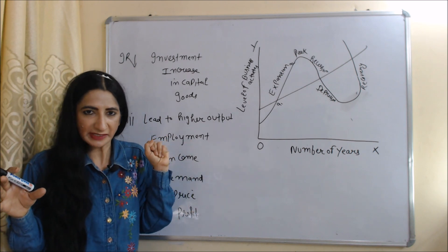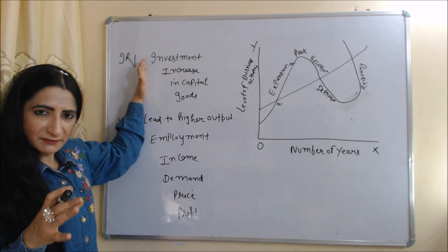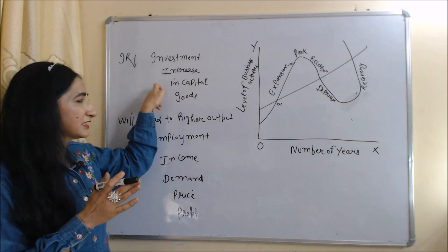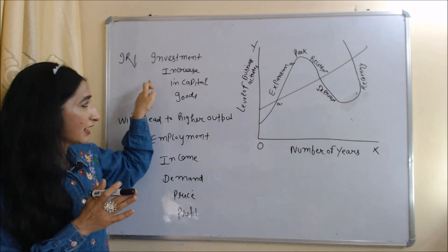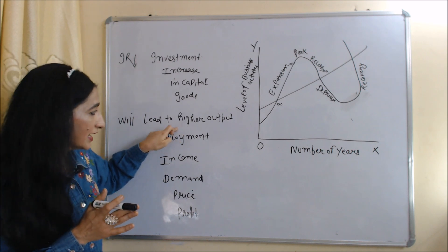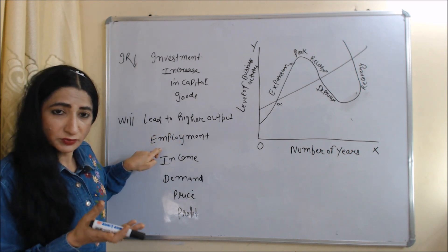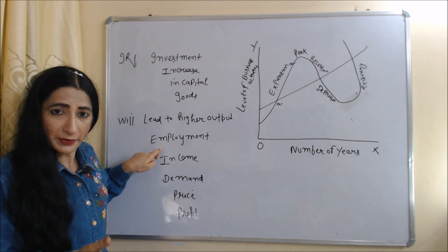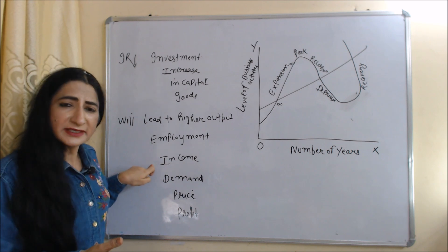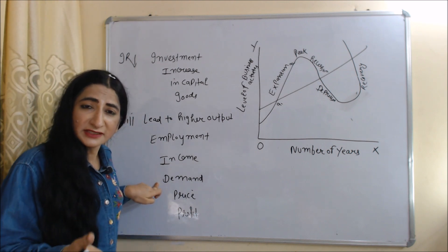Now we will see how investment leads to the expansion path of business cycle. Suppose interest rate is low — as a result people take more loans from banks for investment purpose. Investment in capital goods will increase, and high investment in capital goods leads to higher output. Higher output increases employment in the economy because more employees are needed for production.